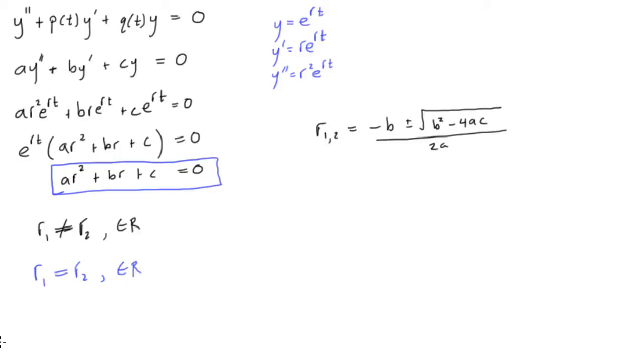And then we can also have r₁ not equaling r₂, and they would not be real numbers, so that would mean that we would have to have b² - 4ac to be less than zero because then we'd be taking the square root of a negative number. Okay. So these are the three different cases.